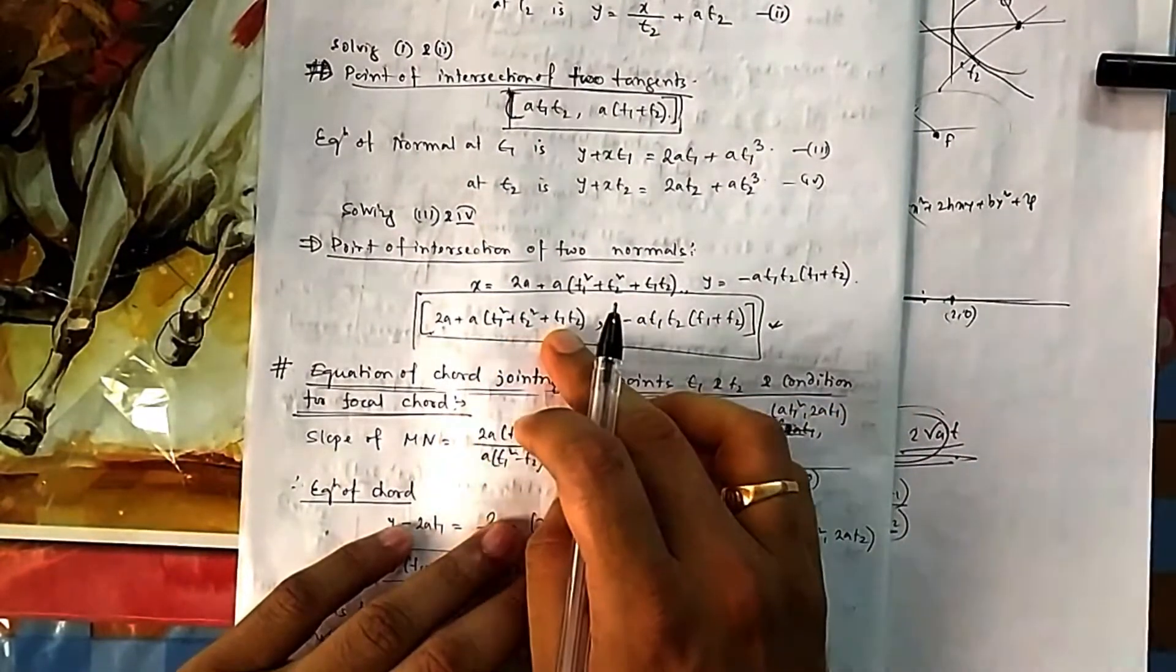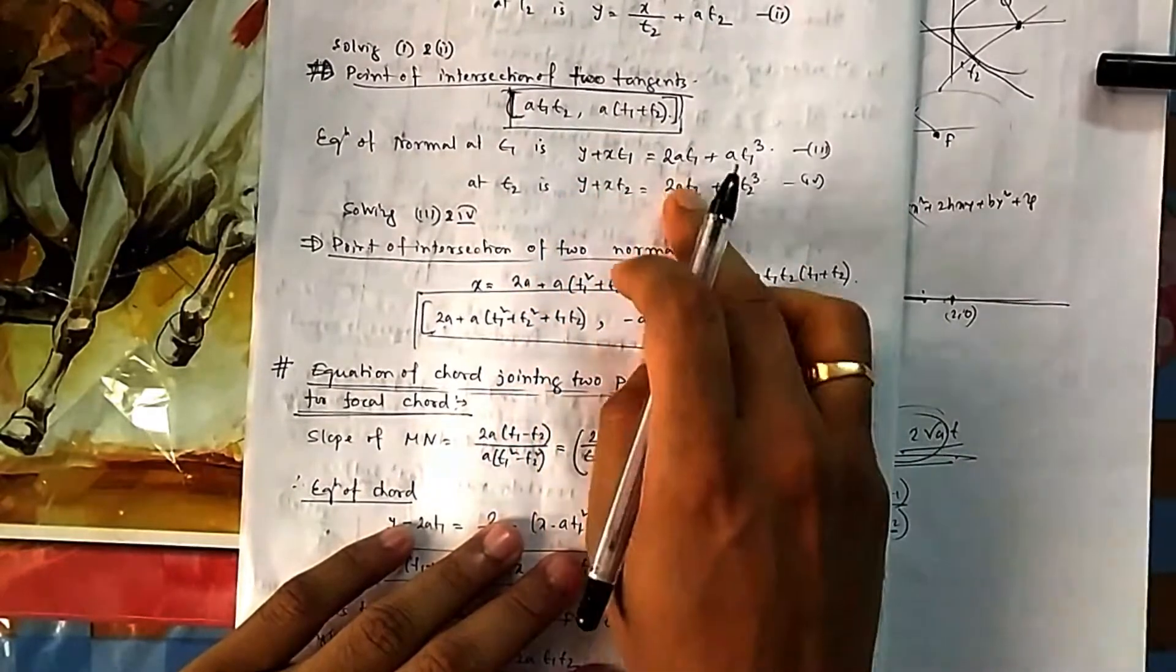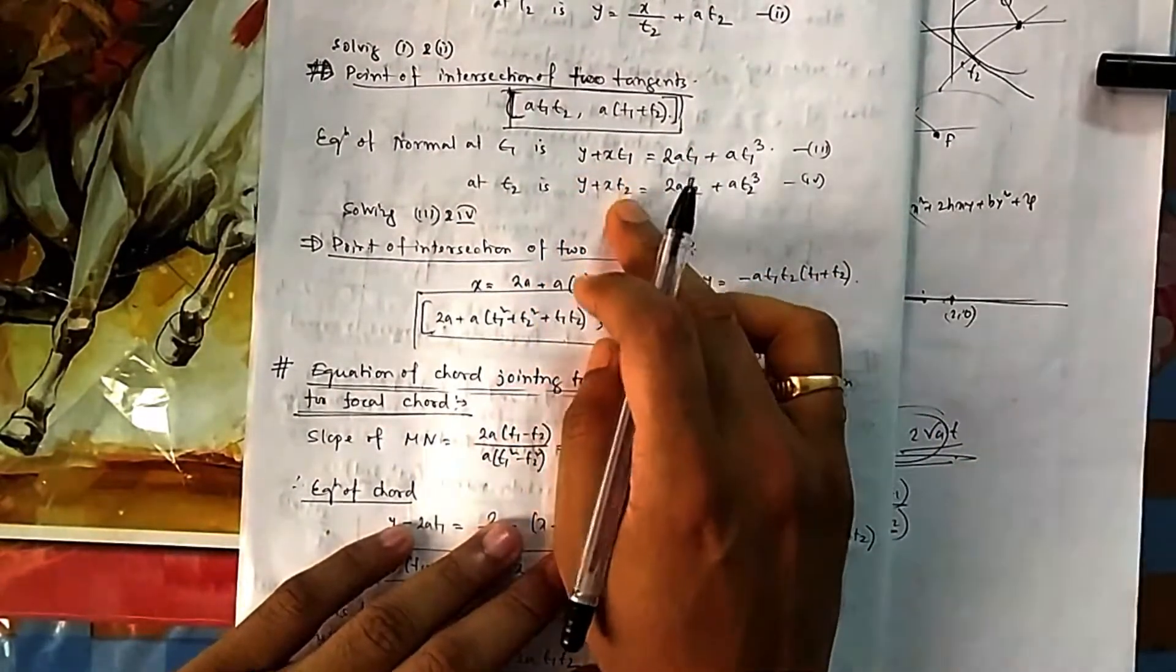And it is t1 square, t2 square, t1 t2. Again you can solve, you deduce these two, then you find x, put it in one of the equations, you find y.